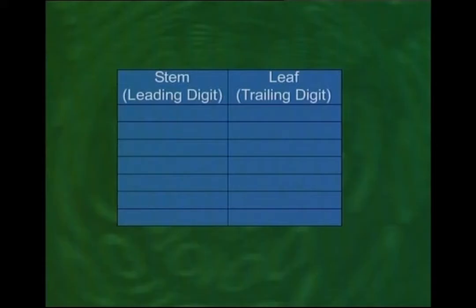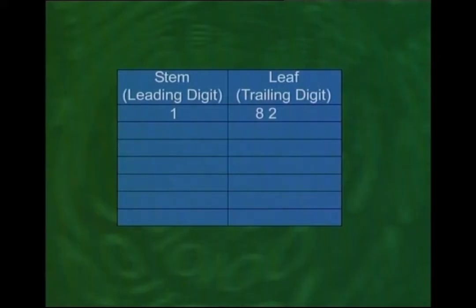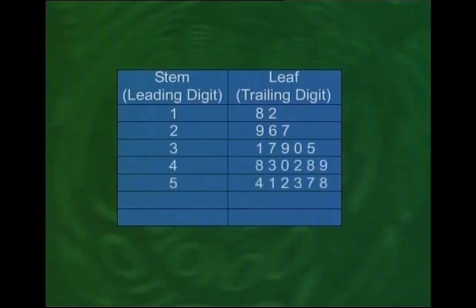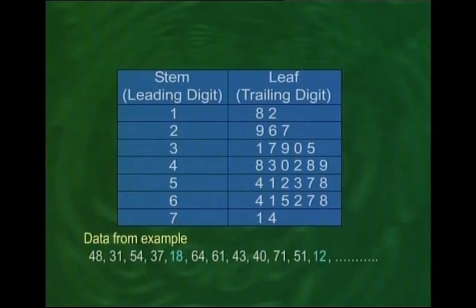If we do that, we obtain the stem and leaf diagram you now see on the screen. The very first stem is the digit 1 and the leaves corresponding to that stem are 8 and 2, because in our data set there was one patient aged 18 and another aged 12. The data has been entered in the same order as it originally appeared.